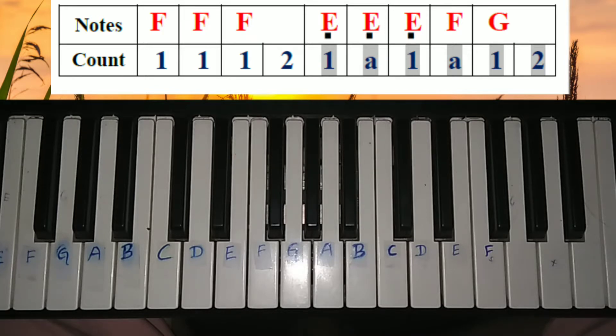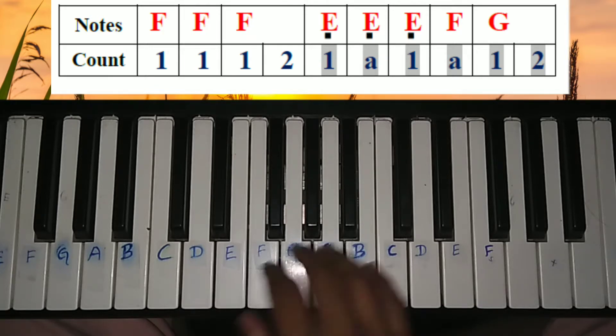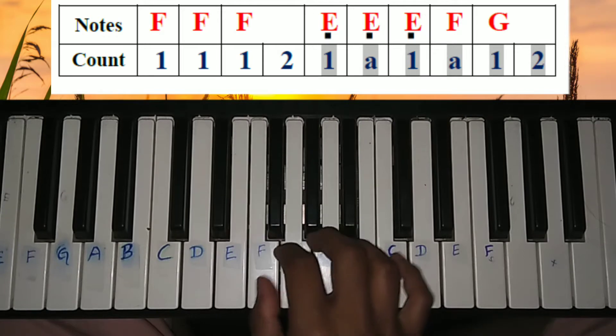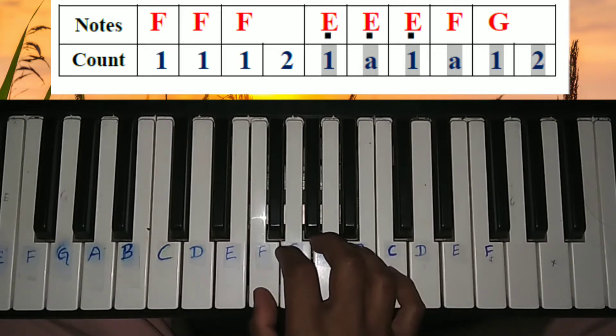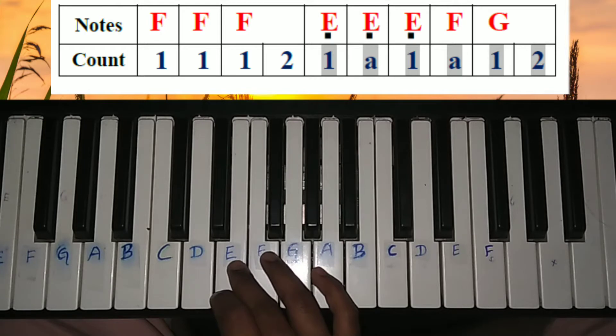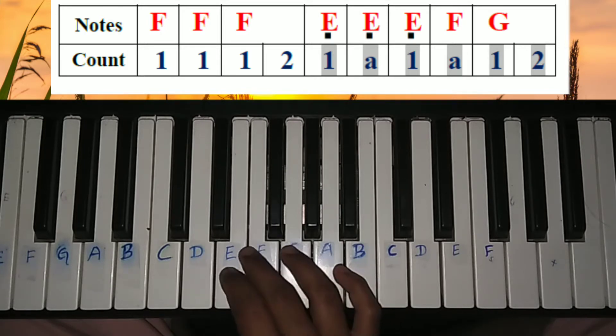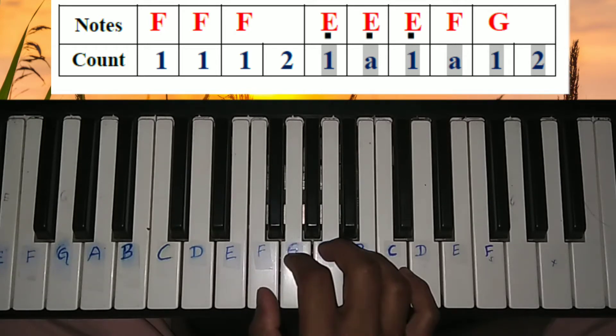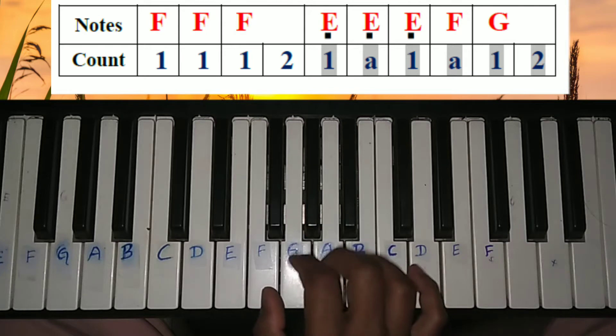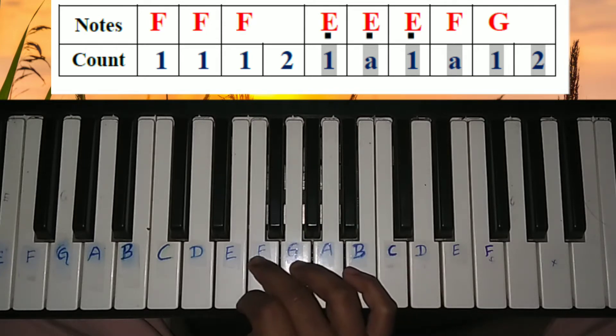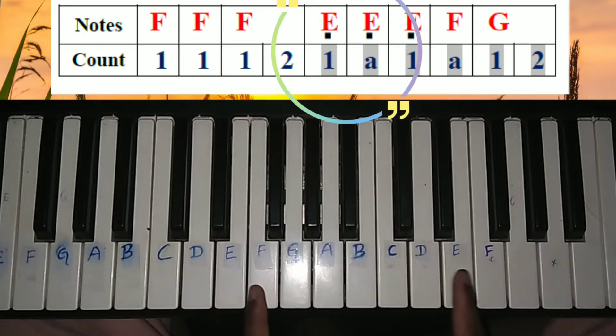For the two counts at the end, and then the eighth note. The eighth note consists—it should be played like this: one count, two notes. And also the E. There is a dot below that, so for F scale...